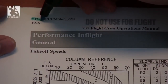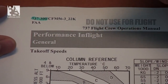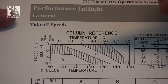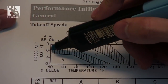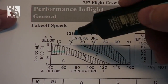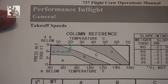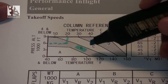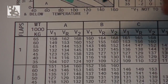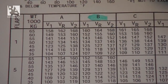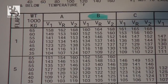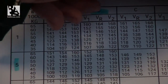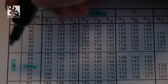We identified the chart as the takeoff speed chart for the 737-300. Then we go into the column reference table — we have to check our temperature against our pressure altitude. Let's say we have 6,000 feet of pressure altitude at our airport and 20 degrees centigrade of temperature. This puts us into the B column. Knowing this, we go downwards into the B column and find our weight against our flap setting.